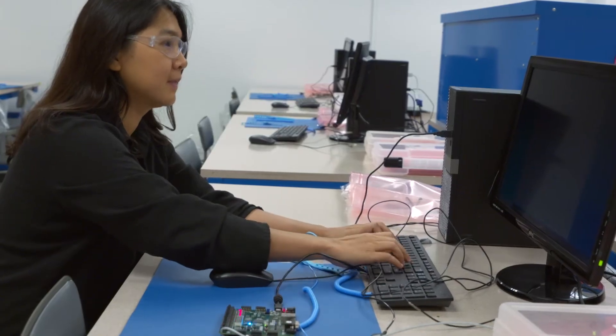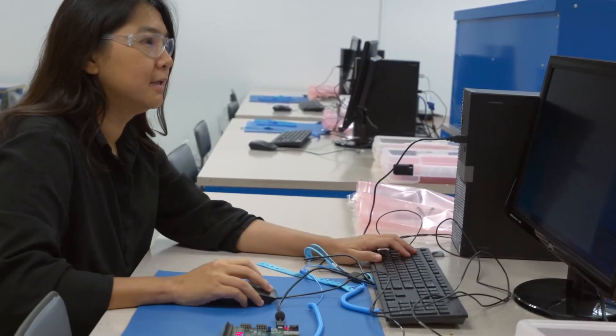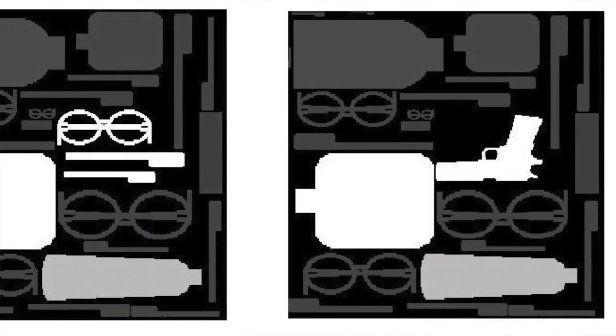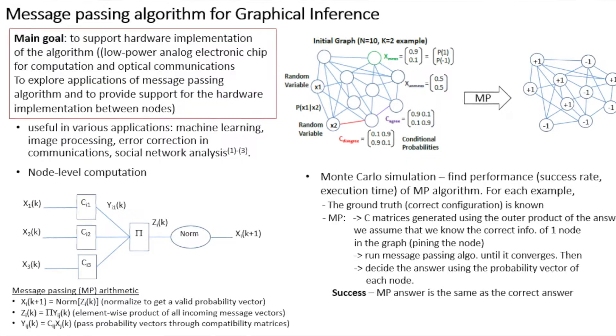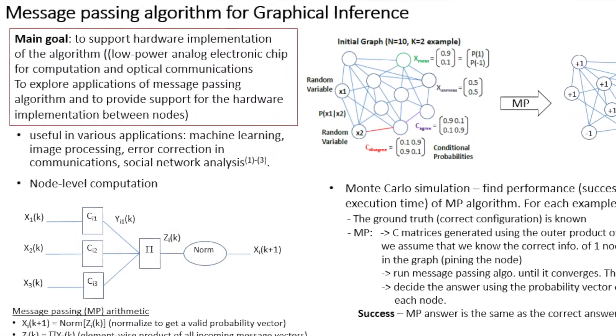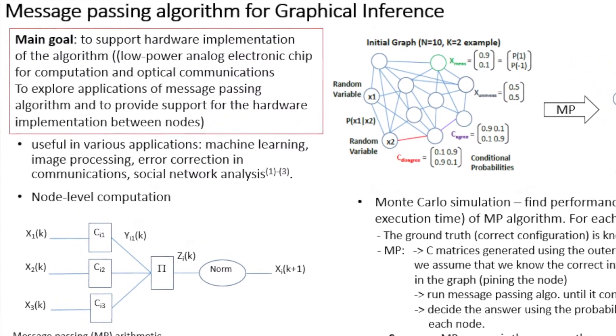I'm also a researcher in two research projects with ECE and optics. My research is about signal processing. One of them is how to improve the backscanner when you go through the airport, which allows us to implement algorithms so that we can understand the X-ray machine better and improve the threat detection performance of the machine.